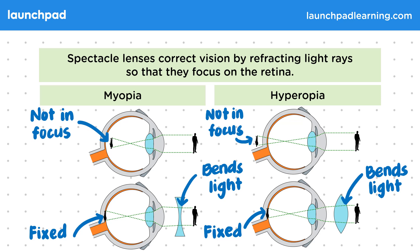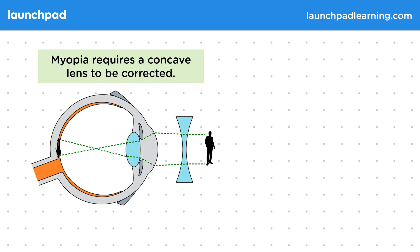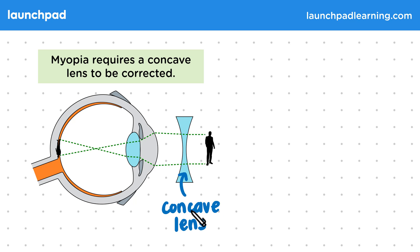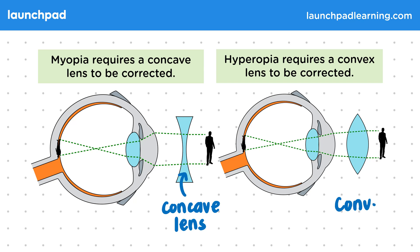So which type of lens is used for which type of issue? Myopia requires a concave lens to be corrected. To remember the name of this lens, you can look at its shape — a concave lens has a caved shape. Hyperopia requires a convex lens to be corrected. This convex lens refracts light inwards so that the image gets focused on the retina.